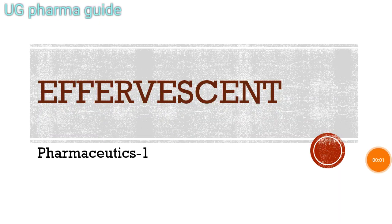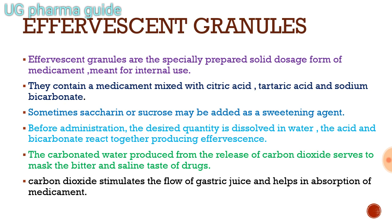In the previous video, I discussed about dusting powders. In this video, I am going to discuss about effervescent. If you have seen Eno or Disprin, you will need to know what effervescent granules are. Eno is one type of effervescent granules and Disprin is one type of effervescent tablet.